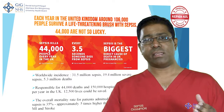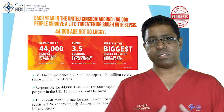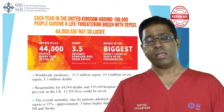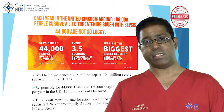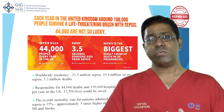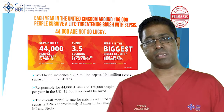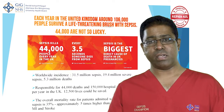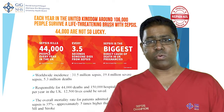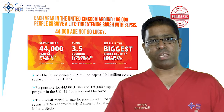We know that severe sepsis — the group with sepsis and organ dysfunction — has a mortality of about 35%, higher than patient groups with ST elevation MIs and strokes. We need to identify the signs and symptoms of sepsis and severe sepsis early, because the interventions we do as part of the Sepsis 6 are very quick and very basic.